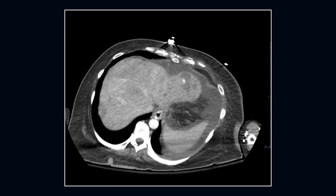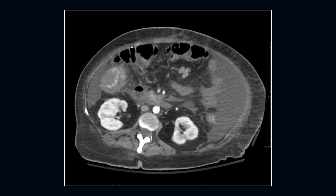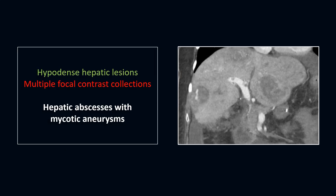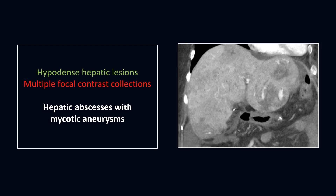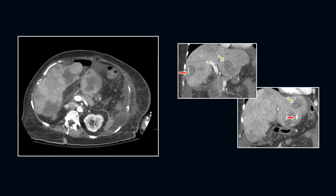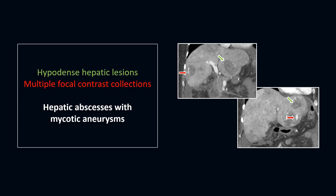Next case, here we have multiple hyperdensities in the liver and sac-like vascular structures within these hyperdensities. There are multiple hyperdense lesions throughout the liver, an aneurysm in the right lobe, and deposits in the portal vein. There are also several aneurysms in the lesions of the left lobe, and severe ascites in the abdomen and pelvis. This is a case of liver abscesses with mycotic aneurysms.